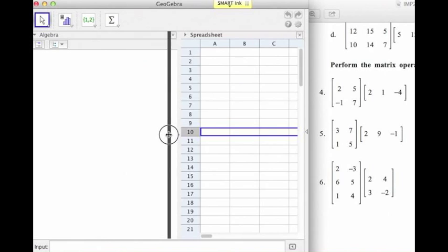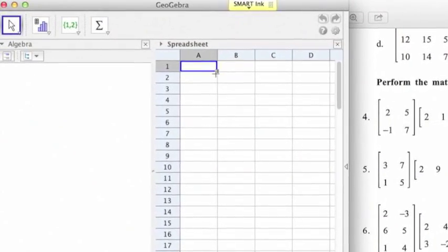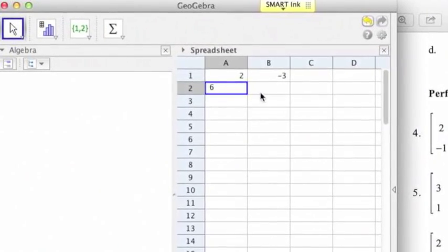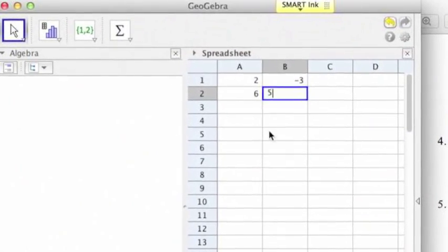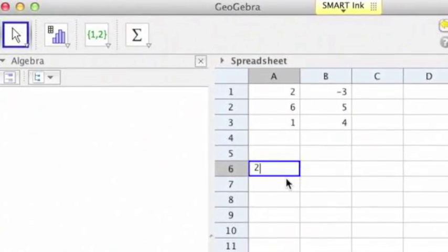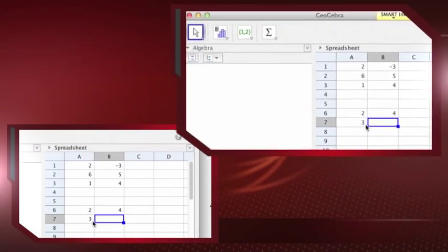I'm going to do question number six, so I'm going to enter 2, -3, 6, 5, 1, 4 for the first matrix, and just going down a little bit, the second matrix: 2, 4, and 3, -2.